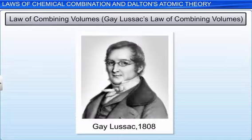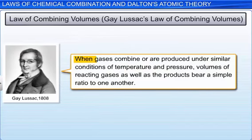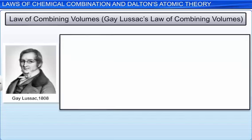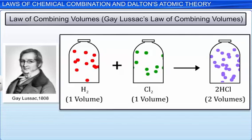In 1808, Gay-Lussac put forward a generalization which defines the relationship between volumes of gaseous reactants and products. This generalization is known as Gay-Lussac's Law of Combining Volumes. It states that when gases combine or are produced under similar conditions of temperature and pressure, volumes of reacting gases as well as the products bear a simple ratio to one another. For example, when one volume of hydrogen reacts with one volume of chlorine, the result is always two volumes of hydrogen chloride. Thus, the ratio of volumes of reactants and products of this reaction is simple.